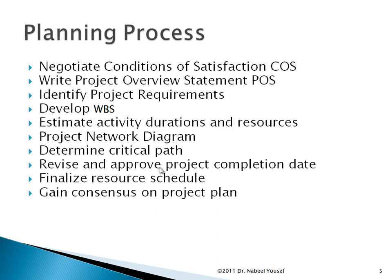In the planning process, we negotiate the conditions of satisfaction and then write a project overview statement to document the conditions, assumptions, and requirements needed for the project. In addition, we start developing the work breakdown structure, which is the group of activities needed to accomplish the goal or the project objectives. Then we estimate activity durations and resources, develop a project network diagram, determine the critical path, revise and approve the project completion date, and finalize the resource schedule.